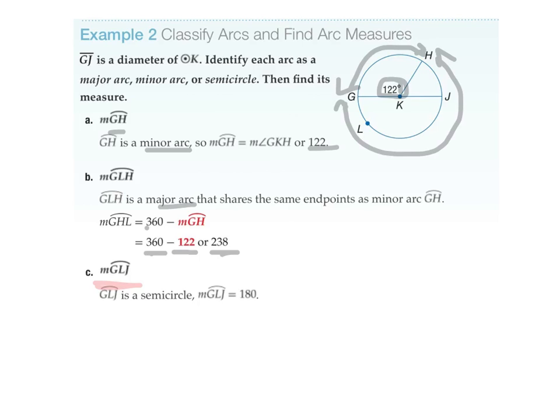And then finally, G, L, J. So G, L, J. That's this sector here. Well, that's a semicircle, 180 degrees.